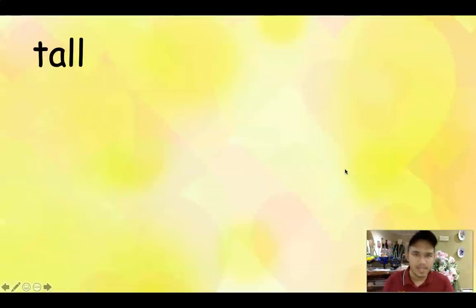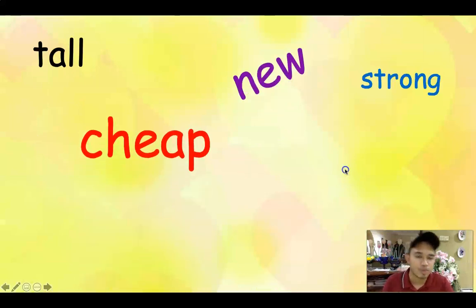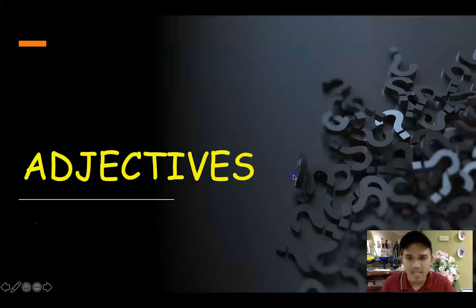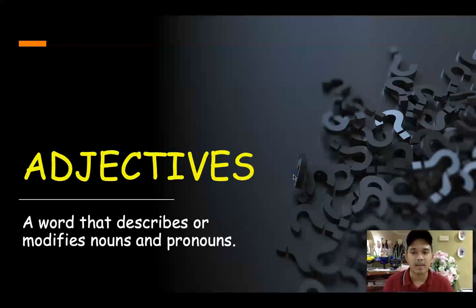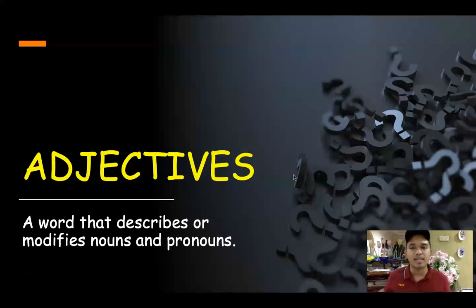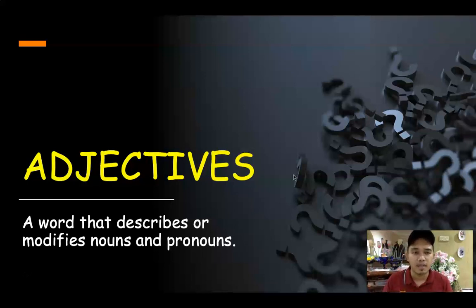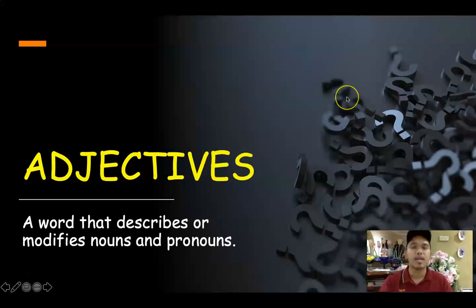Words like tall, cheap, new, strong, fast, high, long — those are adjectives. Adjectives are words that describe or modify nouns and pronouns — kata sifat, satu perkataan untuk menerangkan kata nama ataupun kata ganti nama. For example, the boy is fat, the house is big, the tree is tall — pokok itu tinggi. That is adjectives.